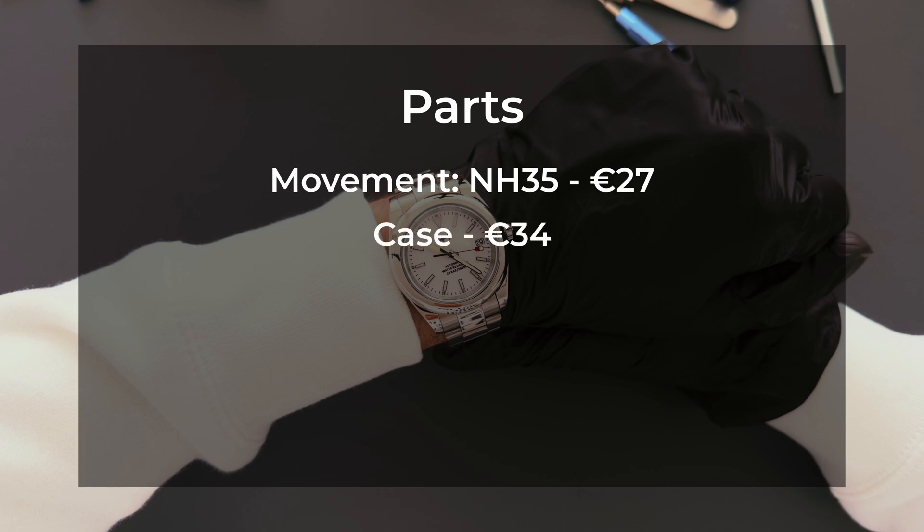Dial. A great-looking dial can cost as little as 8 euros. Hands. Around 5 euros. Total for watch parts. 74 euros.